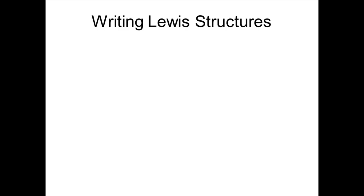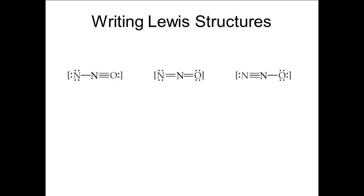Let's look at the molecule N2O, which has the two nitrogen atoms connected to each other. There are three possible structures. One has a single bond between the nitrogen atoms and a triple bond between the nitrogen and the oxygen. The second has double bonds in each place. And the third has the triple bond between the two nitrogen atoms.